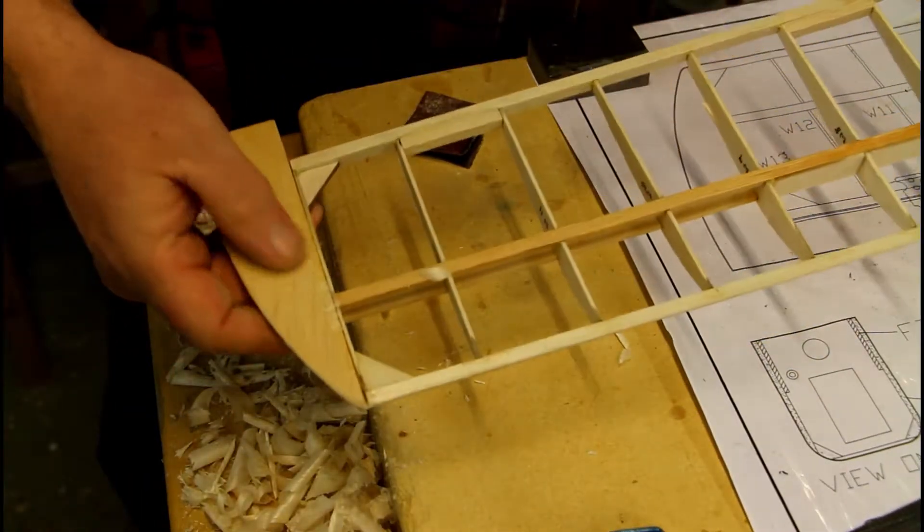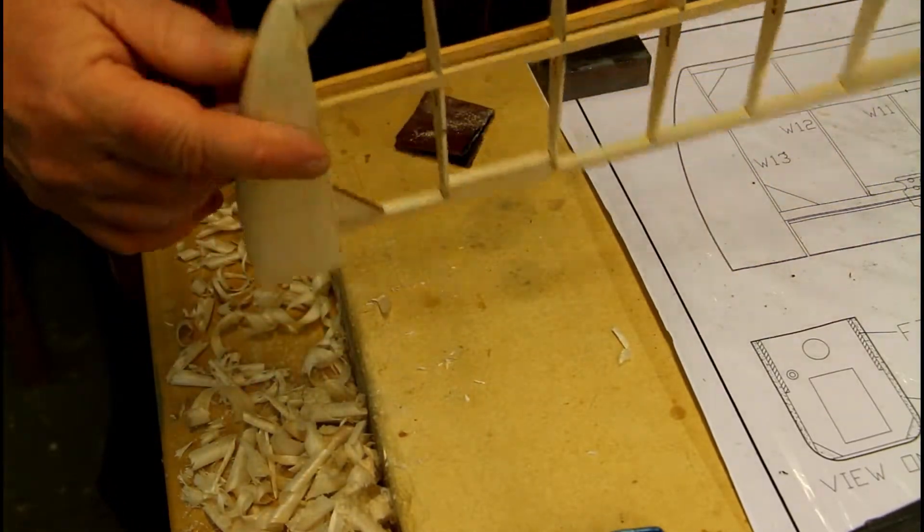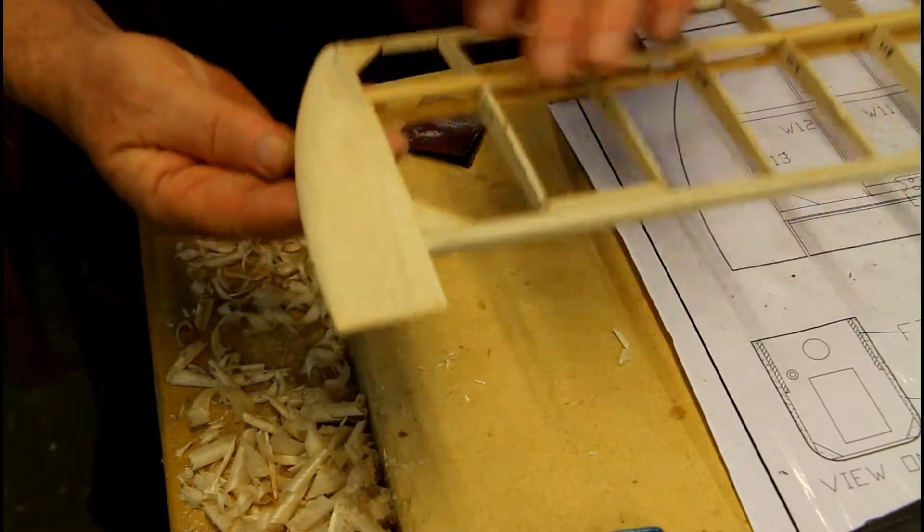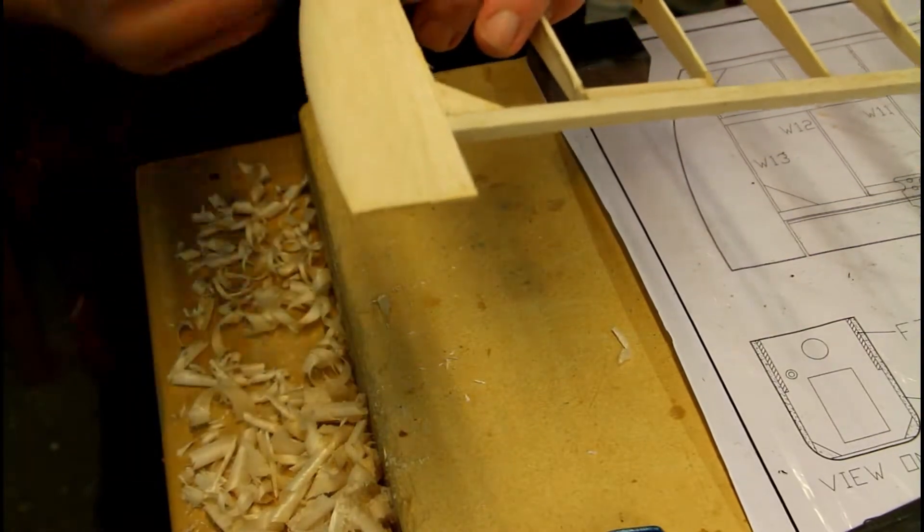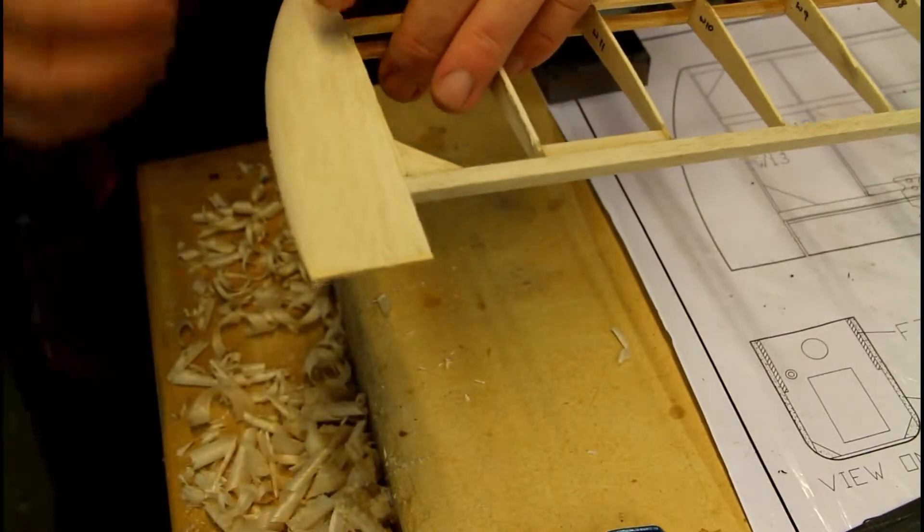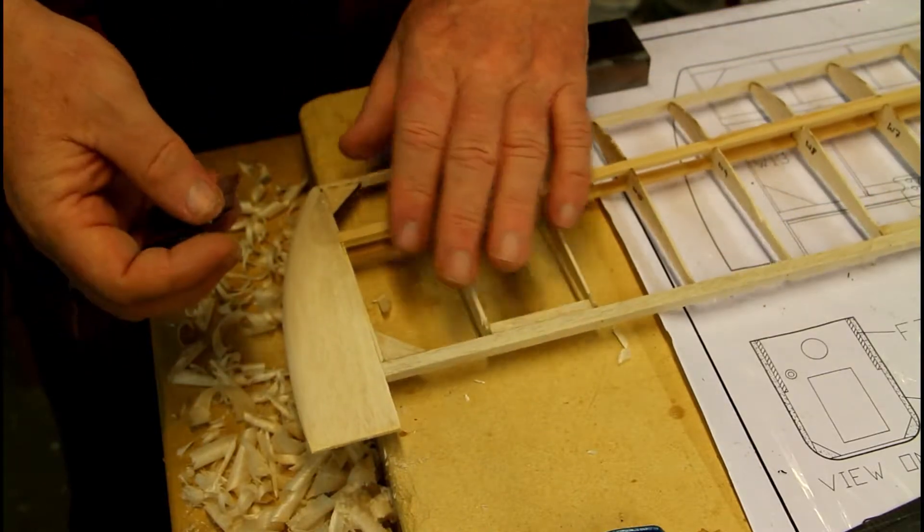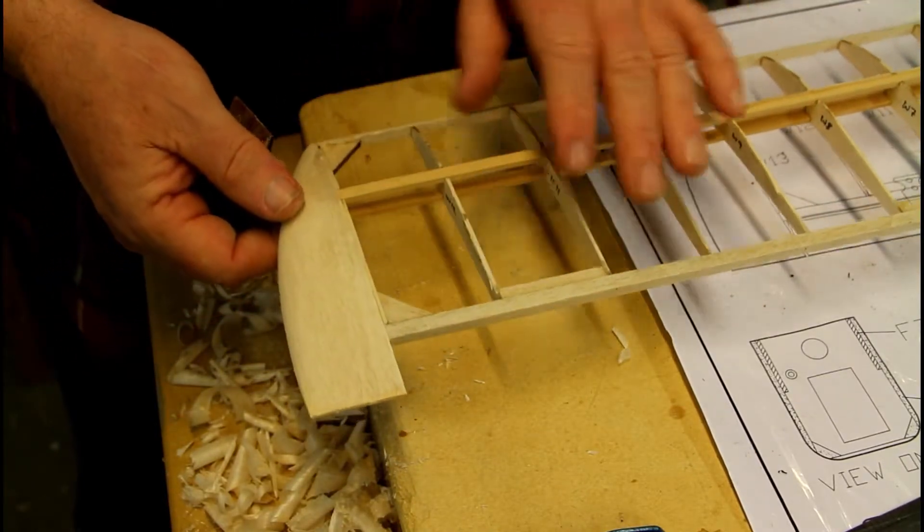So there, the wing tip is on and it's formed, and I will finish sanding it when I do the final sanding on the wing, before I put some covering on it.